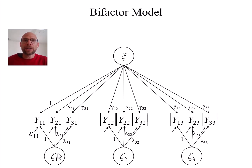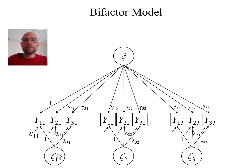Oftentimes a bifactor model is used in the context of hierarchically structured constructs like intelligence, when you have different facets or abilities and you want to separate general variance — the g-factor variance — from specific variance. That is another common area where such a model is applied.